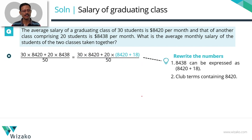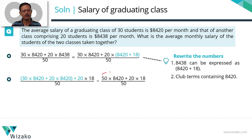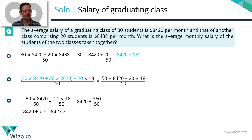Let's quickly see this entire thing in printed form. We basically split 8438 into 8420 + 18, then expand to get 20 × 8420 + 20 × 18. The entire blue portion becomes 50 × 8420, which divided by 50 is 8420. Then 20 × 18 = 360 ÷ 50 = 7.2. So the final average is 8427.2.